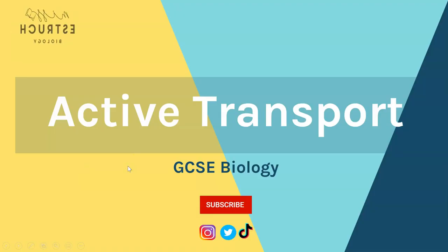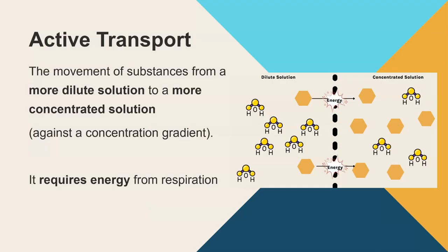In this video we're going through active transport for GCSE biology. Active transport is the movement of substances from a dilute solution to a more concentrated solution - in other words, going against the concentration gradient. Looking at this diagram, the dilute solution has lots of water molecules but only two solute molecules - which could be sugar or salt. The concentrated solution has very little water compared to solute. When we say it's going against the concentration gradient, we mean going from an area where there's very little of that solute to where there is a lot. Because this is going against the concentration gradient, energy is needed to help move those molecules.